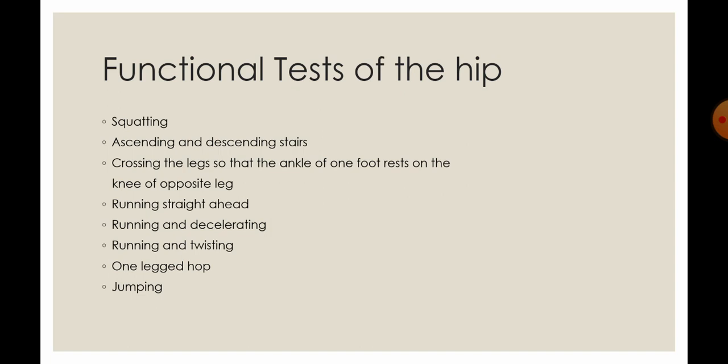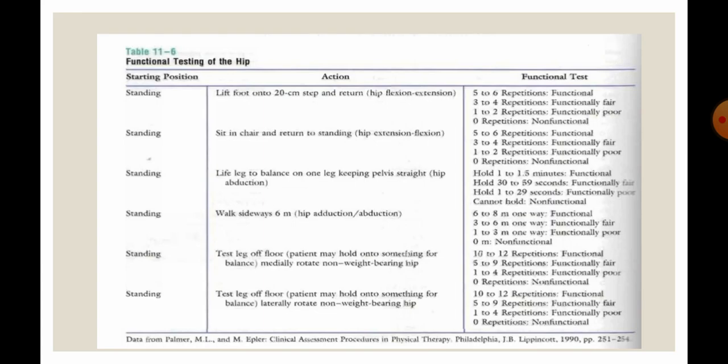There are functional tests you can perform on your patient to see if they have proper functional range of motion. These include: squatting, ascending and descending stairs, crossing the legs so the ankle of one foot rests on the knee of the opposite leg, running straight ahead, running and decelerating, running and twisting — changing direction — one-leg hop, and jumping.